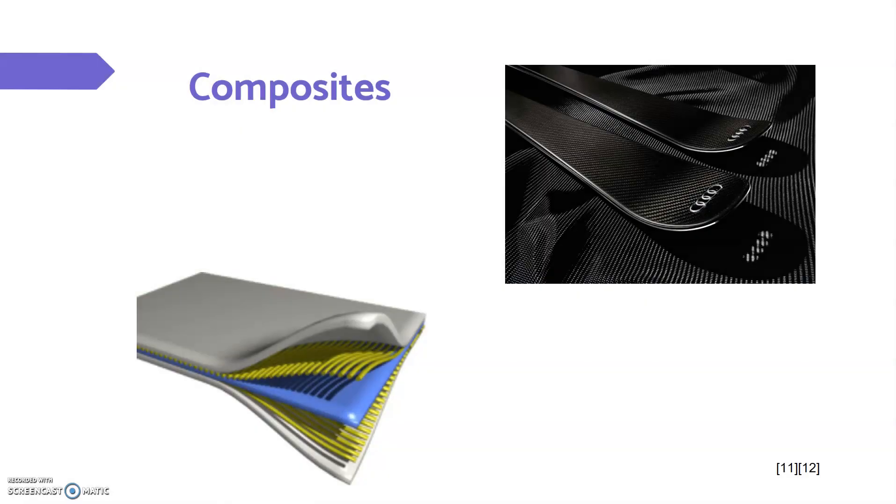Composite material is the really new cool material. This is taking other materials from the previous groups and adding them together to create something new from two or more constituent materials with different physical or chemical properties. When combined, they produce a material that has characteristics vastly different from the individual components. Common examples are stronger, lighter, or less expensive when compared to their traditional counterparts.